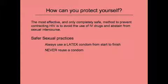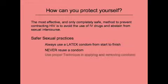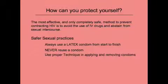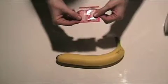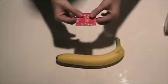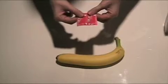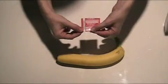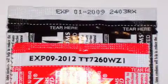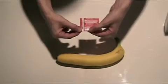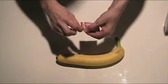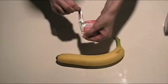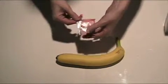Be sure to use a new condom from start to finish every time you engage in sexual activity. It is also important to use proper technique when applying a condom. Before the wrapper is opened, it should be inspected for any holes or damage to the outside which may indicate damage to the condom inside. If the outside wrapper is intact and within the expiration date, open the condom by gently pulling the side of the wrapper down. Do not use your teeth, scissors, knife, or other sharp objects to open the condom wrapper.